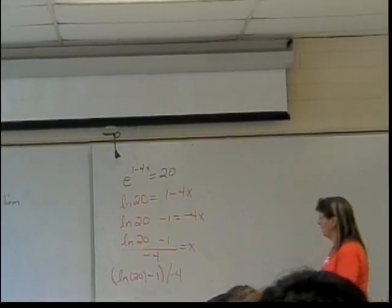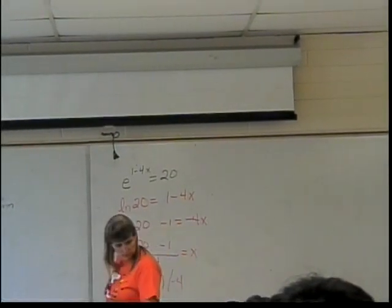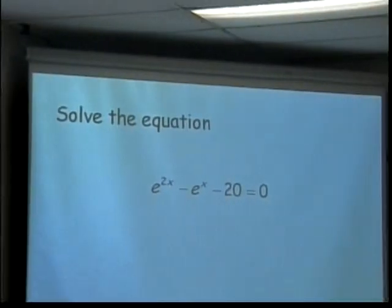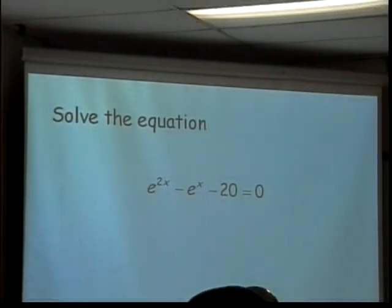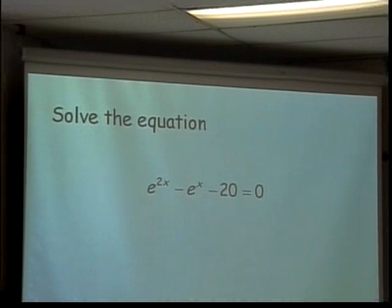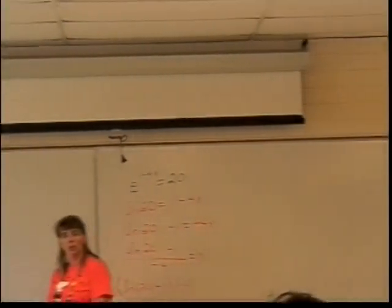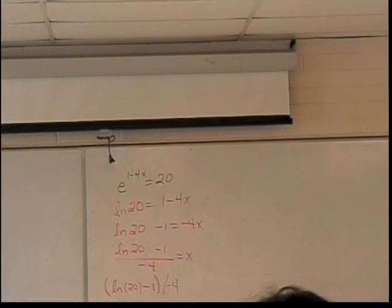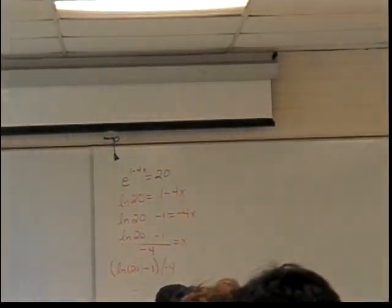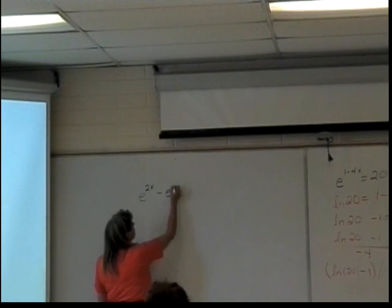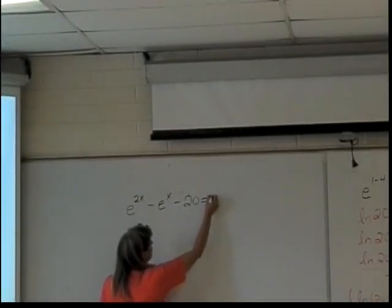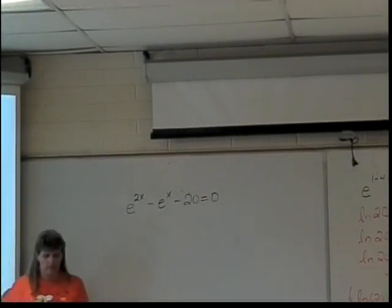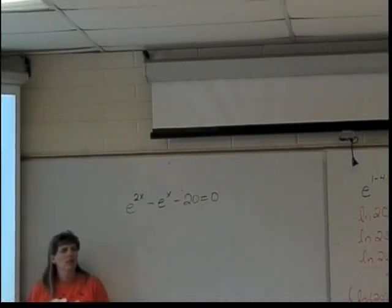What about this equation? e to the 2x minus e to the x minus 20 equals 0. Now, over here I was okay because I had my exponential form on one side, everything else on the other. And I could just change to logarithm. But here I have e to the 2x minus e to the x minus 20 equals 0. Ideas?